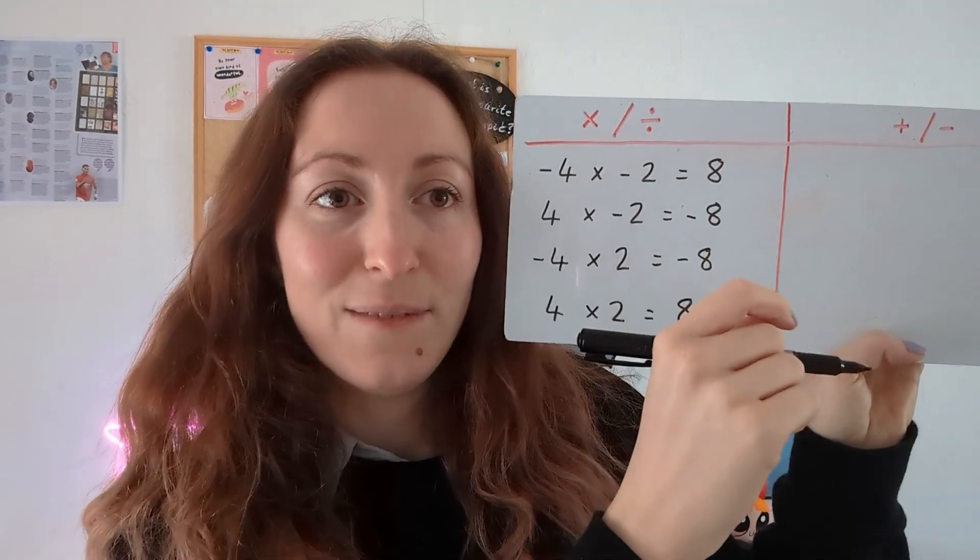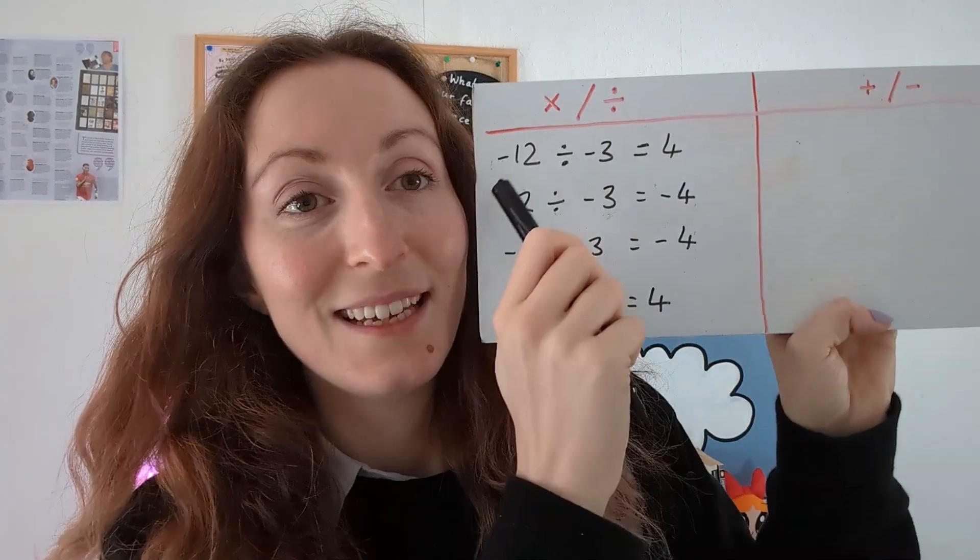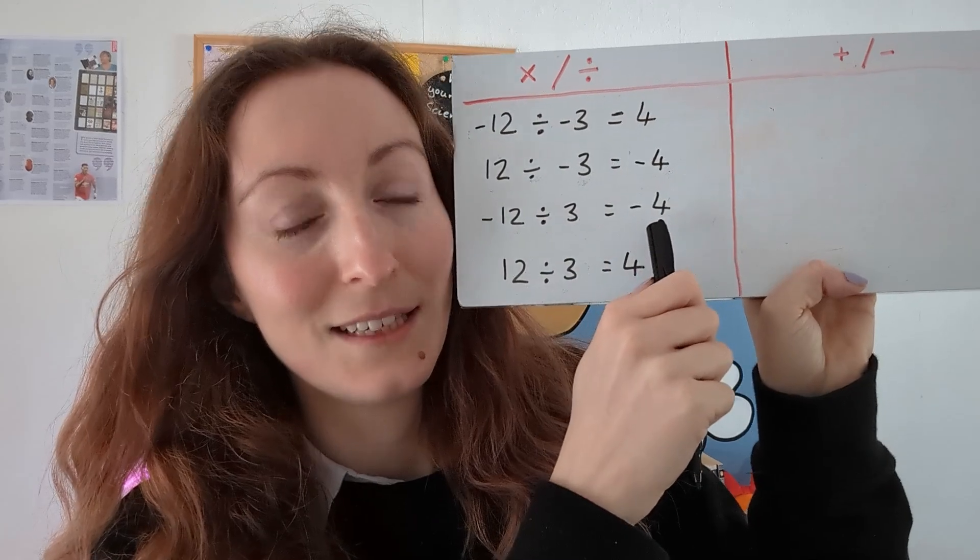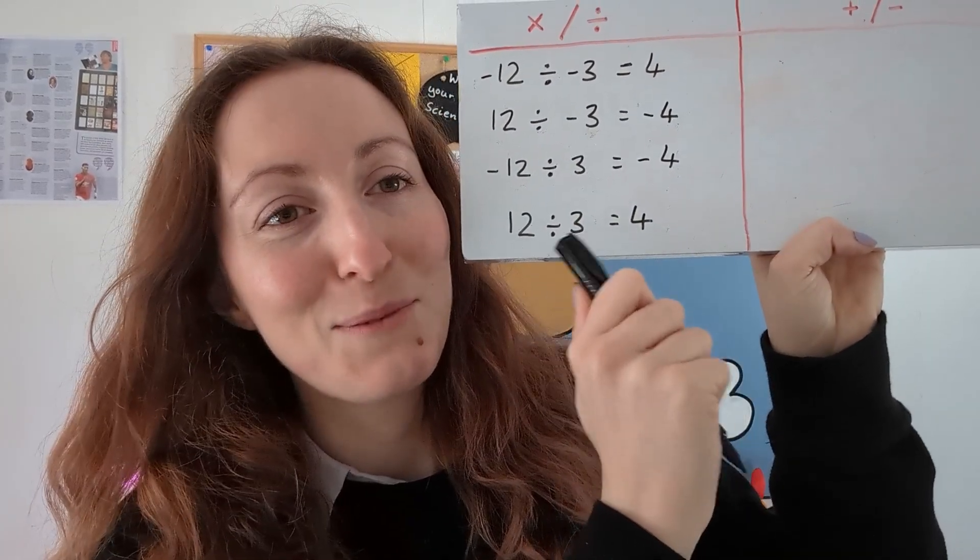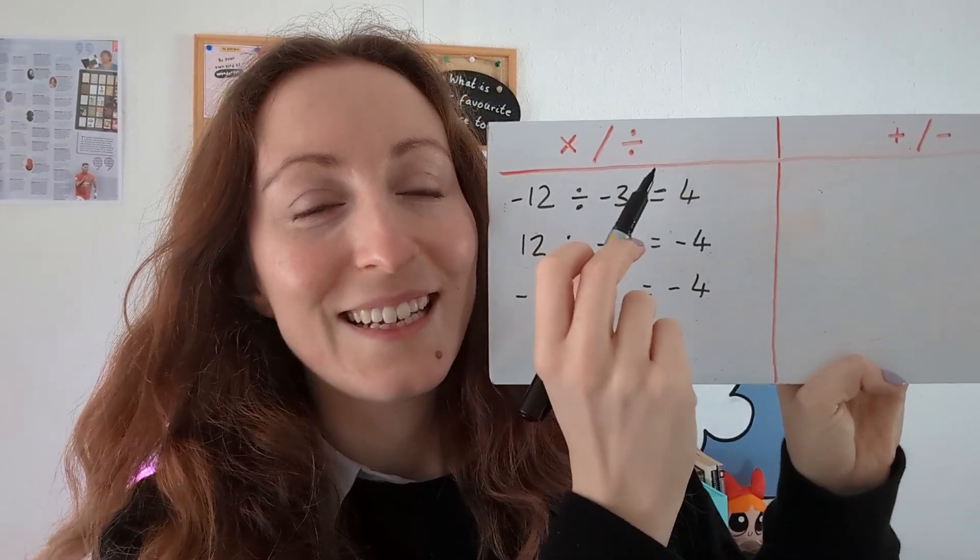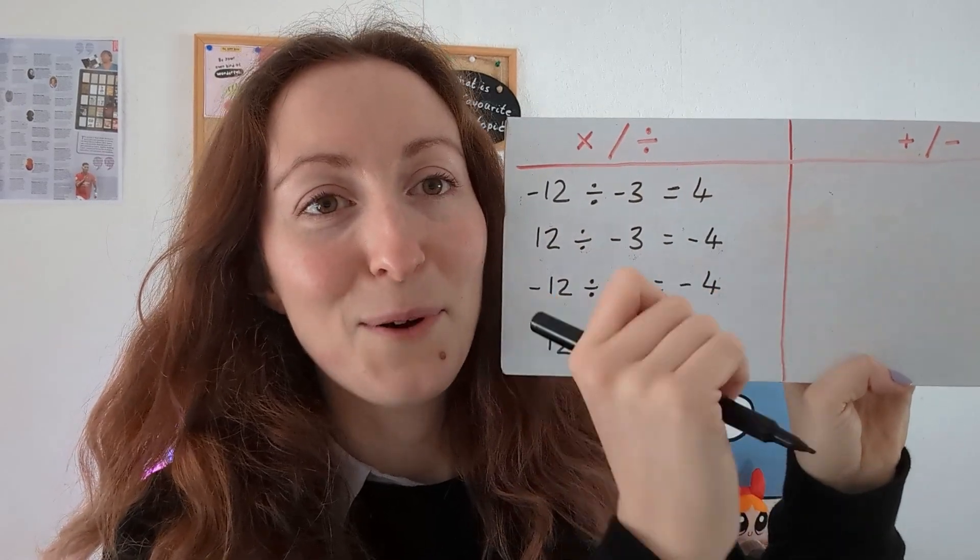Okay, and this works the same for division. We have a negative divided by a negative makes a positive answer. A negative and a positive gives us a negative answer. Negative and positive, negative answer. Same again, just swapped around. As we know two positives makes a positive. Okay, so to summarize multiplying and dividing we're looking at the numbers themselves and whether they are positive or negative.